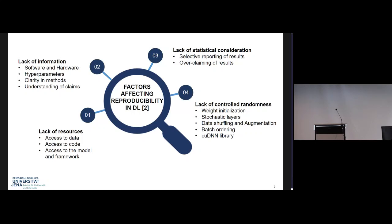So if we try to reproduce their results, we don't find the same result as they produced. The fourth factor is lack of controlled randomness. Deep learning algorithms involve some sort of randomness — this is how deep learning works — and in the end we have run-to-run variability, which also poses problems. This randomness comes from weight initialization, stochastic layers, data shuffling, and so on.